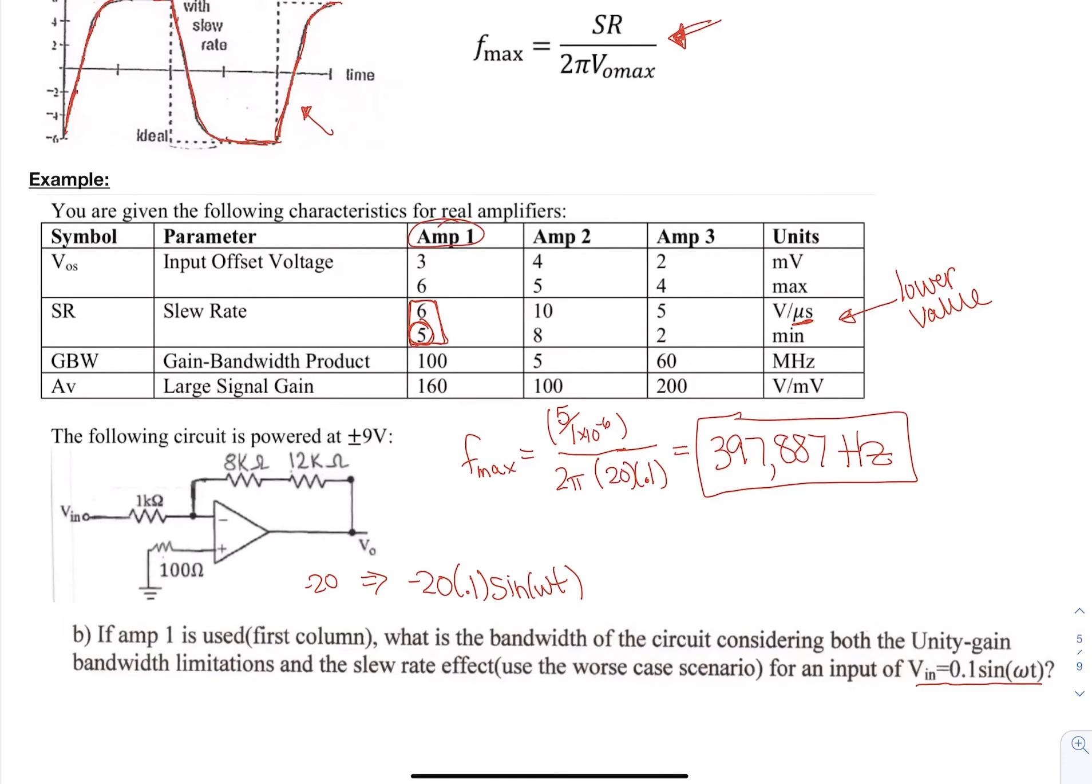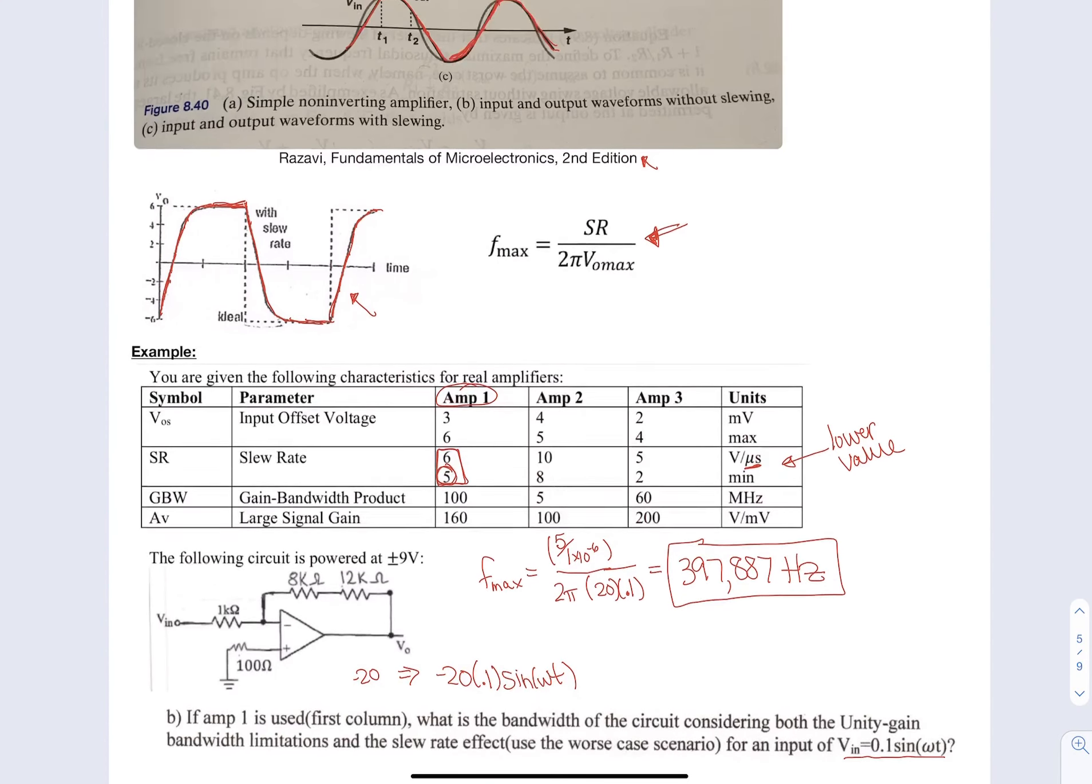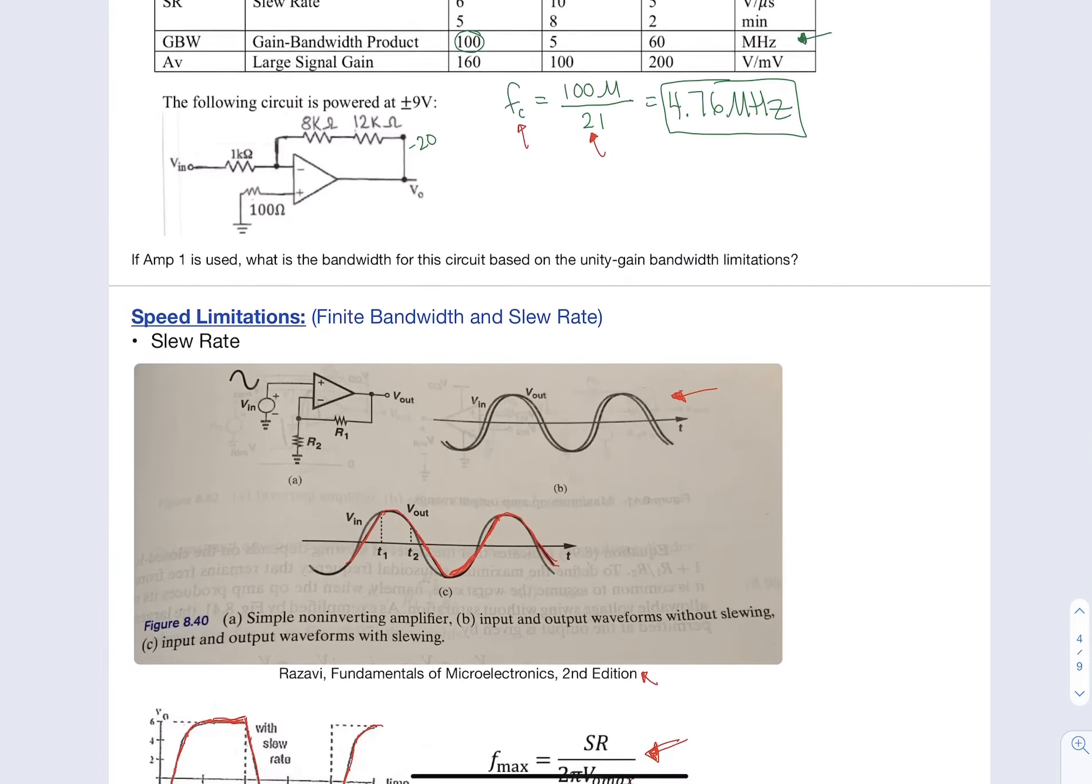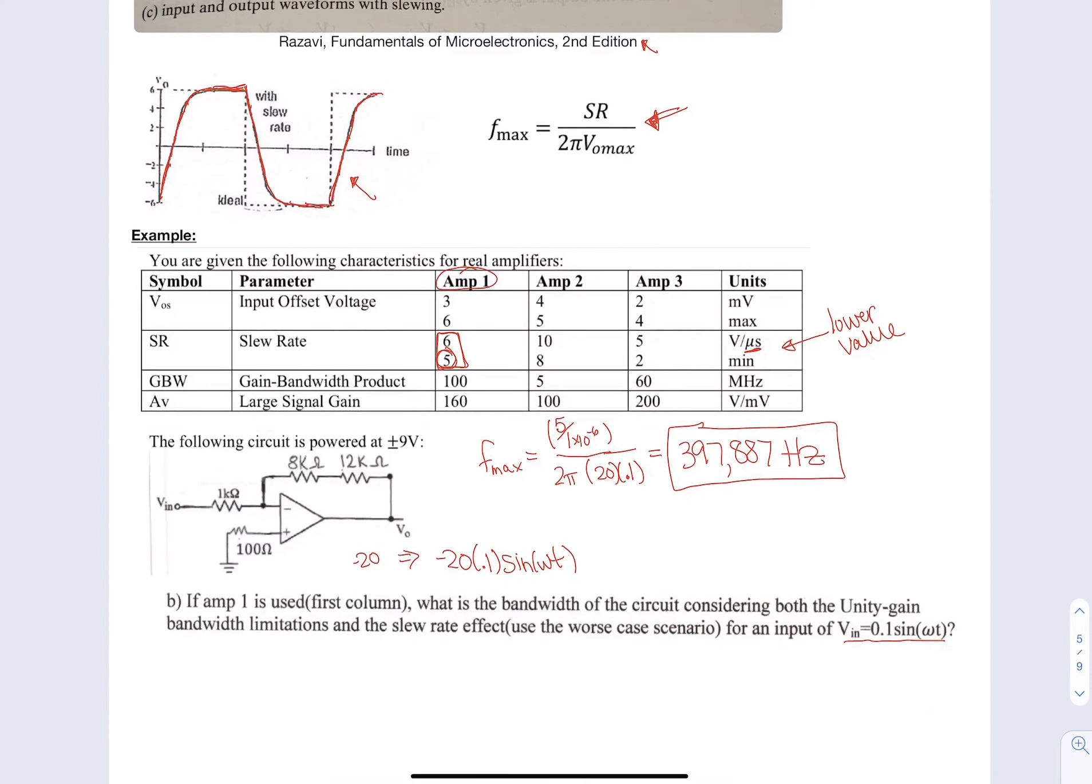And we can compare back to what we found for the frequency, which was 4.76 megahertz for the unity gain bandwidth. And so this is definitely going to be our more limiting range. So we would only be able to say that this circuit under these conditions can operate up to 397 or 398 kilohertz.